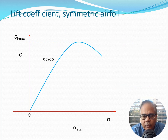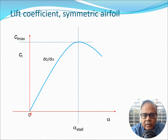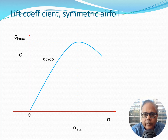For a symmetric airfoil, the curve would pass through zero — when alpha is zero, CL is zero. There are many situations where symmetric airfoils are used; for example, as far as helicopter rotors are concerned, symmetric airfoils are quite ubiquitous.